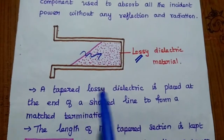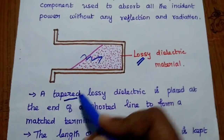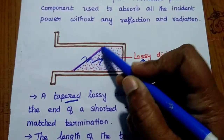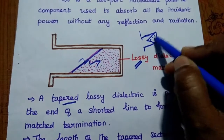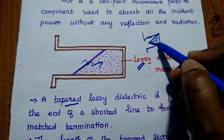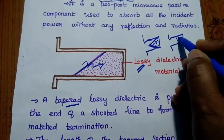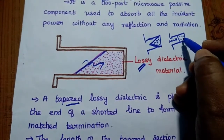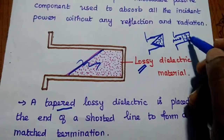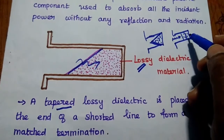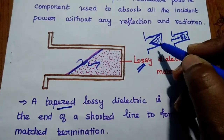A tapered lossy dielectric is placed at the end of a shorted line to form a matched termination. The lossy dielectric is arranged in a tapered manner — like a wedge or landing shape. If the lossy dielectric were placed straight (non-tapered), only the initial part would absorb the signal and the remaining material would not fully engage, causing absorption to stop partway through.